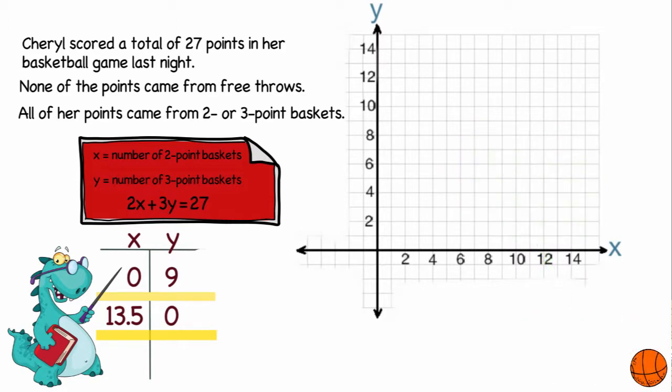So with these two coordinates, I have 0, 9, and I have 13.5 and 0. So on my graph, for 0, 9, I'll go over 0 and up 9. I'll label that. And then for 13 and a half 0, I'll go over 13.5.